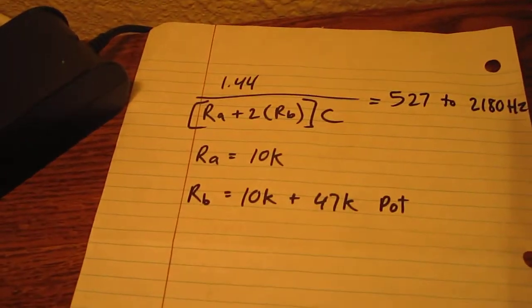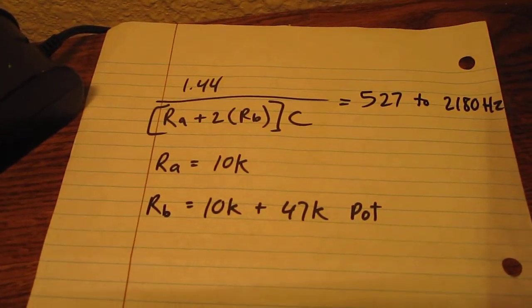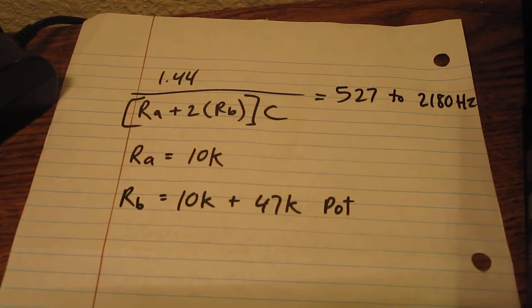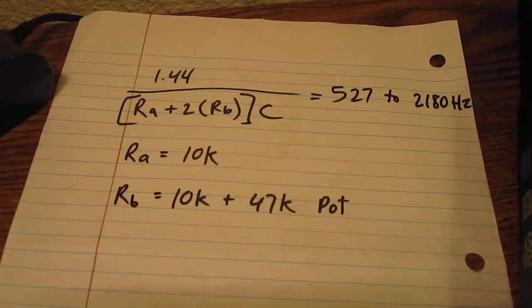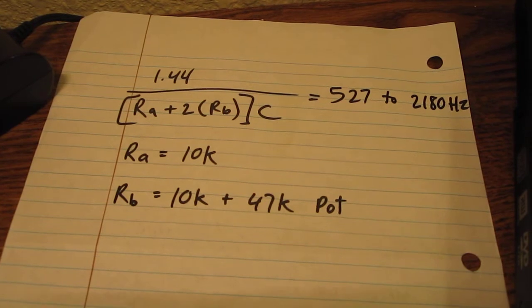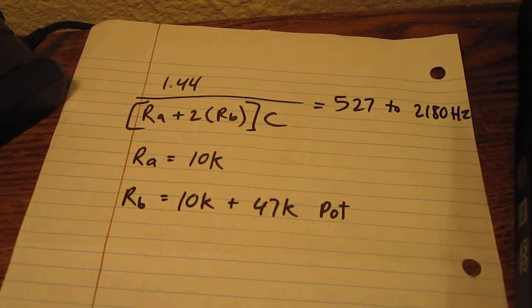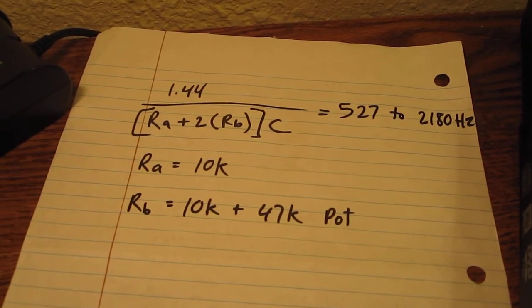There's a formula on the datasheet for calculating the frequency, and that is shown right here. Mine should have a frequency range of 527 hertz to 2180 hertz. I did take some scope plots, and it was just about exactly equal to that.